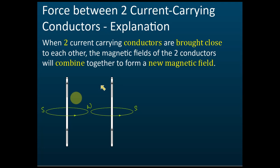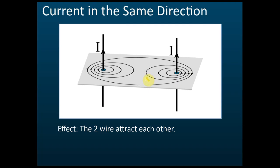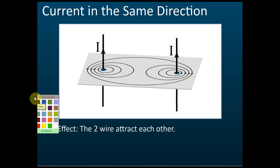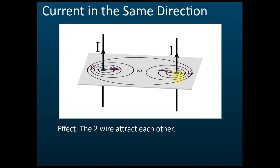So for two currents in the same direction: stronger field at the sides, weaker field in the middle. Looking at the field pattern, you can clearly see a weaker field in the middle and a stronger field at the sides. This is called a catapult field. As we learned, a catapult force is produced — the force acts from a stronger field toward a weaker field. So a force is exerted on the conductors, moving them from the stronger field region toward the weaker field region.